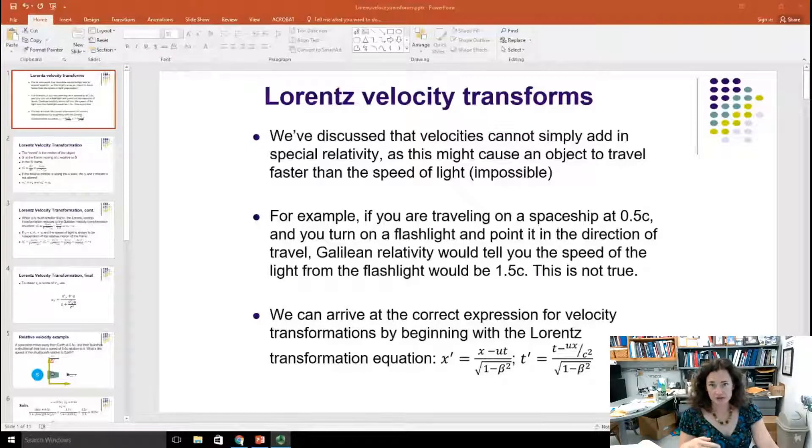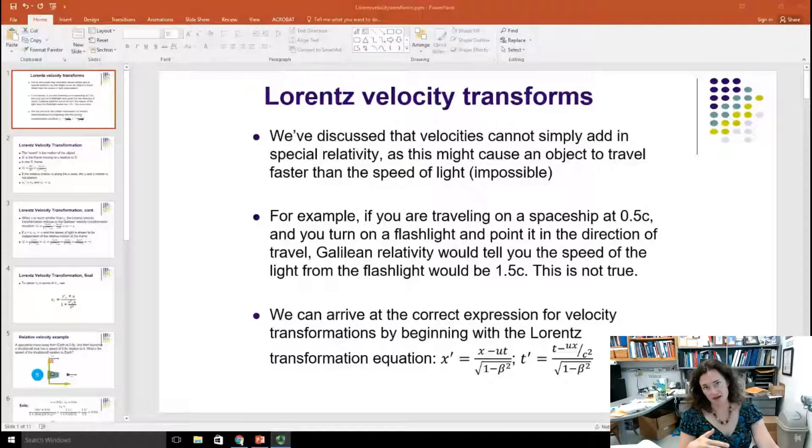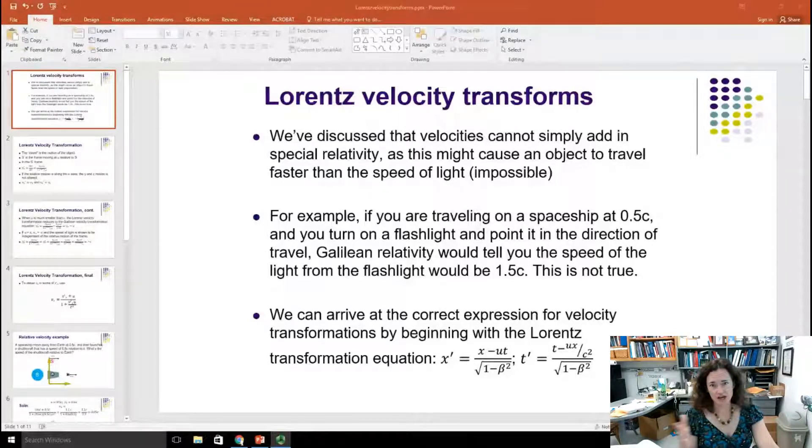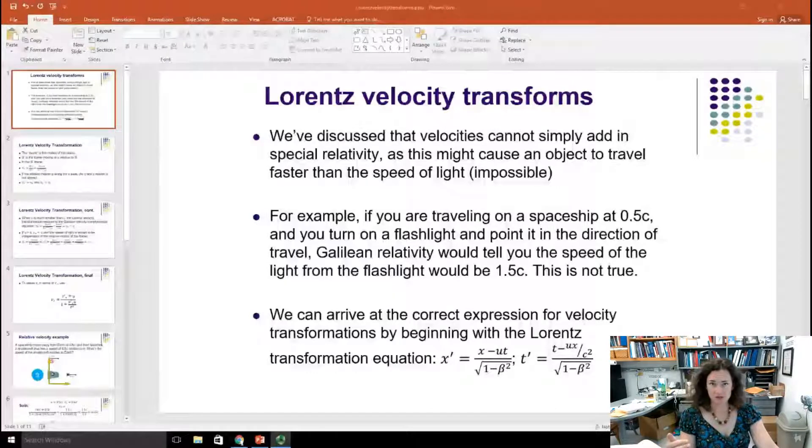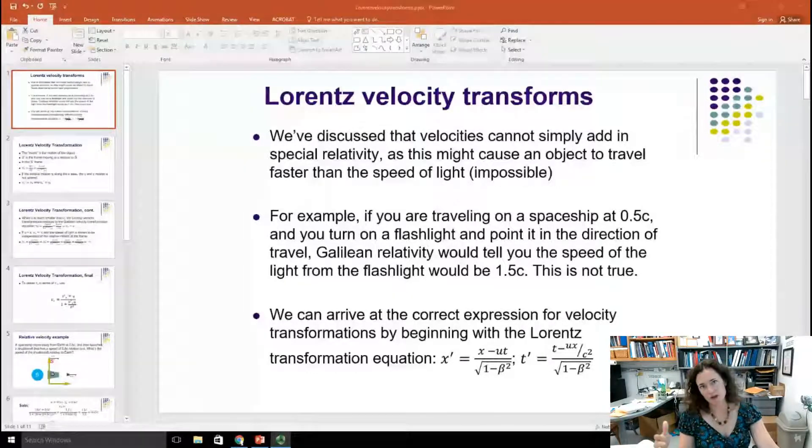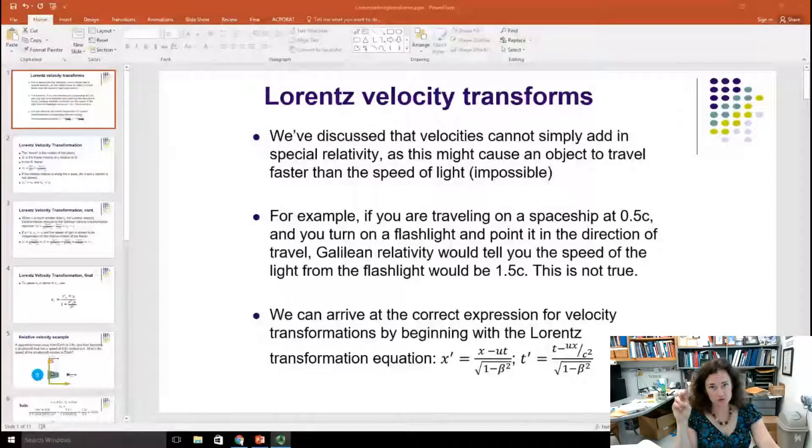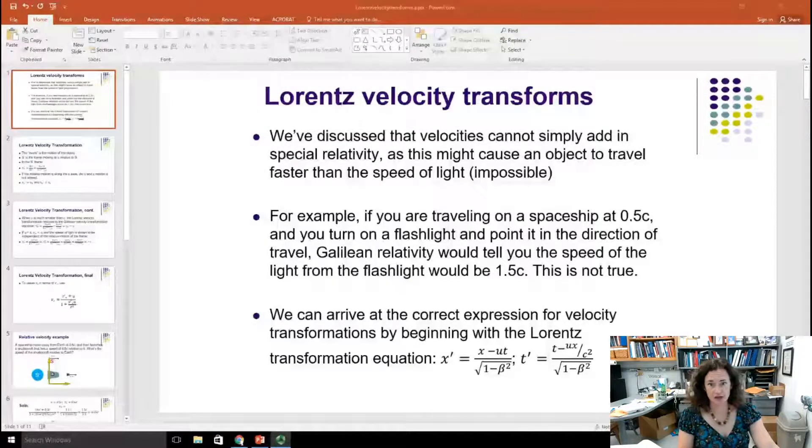We've already discussed that velocities can't simply add in special relativity. This might cause an object to actually travel faster than the speed of light, which is impossible. So you can't straight up add them. You have to have a transformation equation which takes into account the universal speed limit of the speed of light.